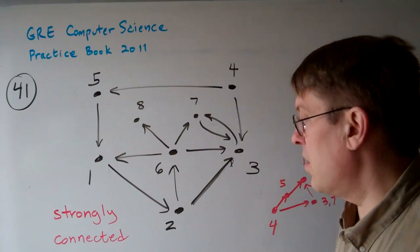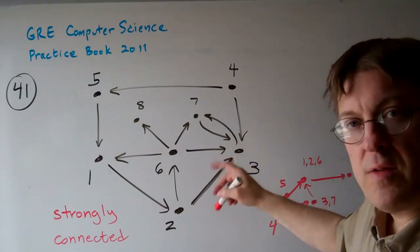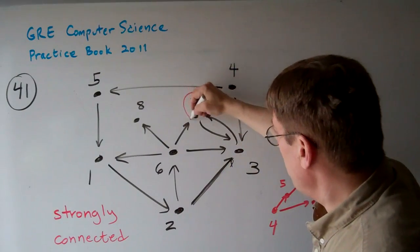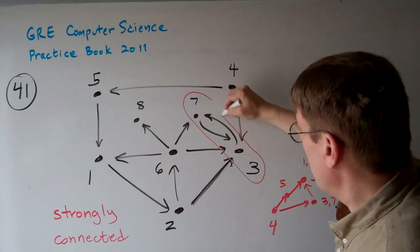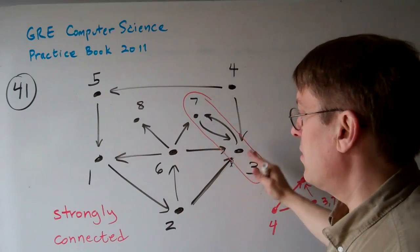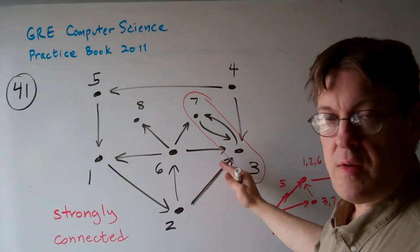This is not overall a strongly connected graph, but there's different areas that are strongly connected. For example, 7, 3 here. 7 goes to 3, and 3 goes to 7. So that's a strongly connected piece there. There's a cycle.